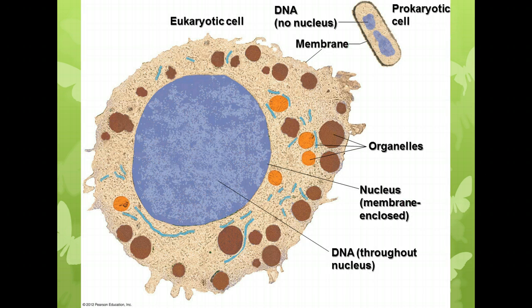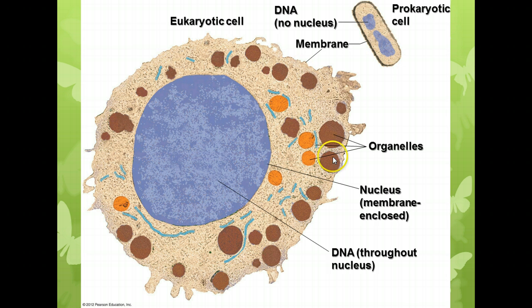Here we have a picture comparing a prokaryotic cell and a eukaryotic cell. This is a bacterial cell, probably an E. coli found in your intestines. It has a cell membrane, a cell wall, and a couple of other structures, plus DNA but not in a nucleus and no other organelles. A eukaryotic cell — notice how much bigger it is; these are relative sizes. Within the eukaryotic cell we have a membrane, DNA enclosed in another membrane inside the nucleus, and other organelles as well. So there are big differences not only in size but also in complexity.